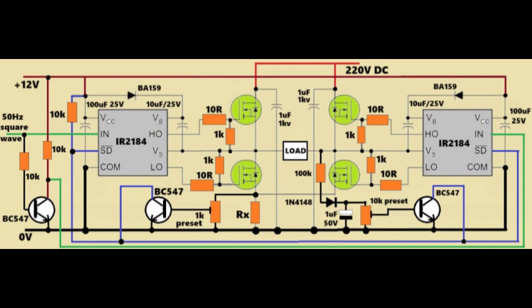Now, let us consider the working of both the IR2184 chips. Each IR2184 is getting supply from plus 12 volts and has a bootstrap diode, BA159, and bootstrap capacitor, 10UF/25 volts, between VB and VS pins. This is needed to drive high-side MOSFETs properly.